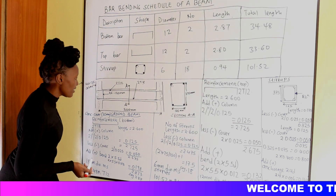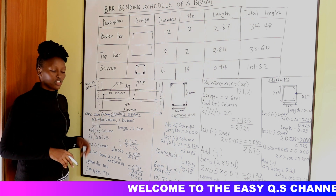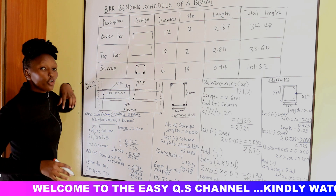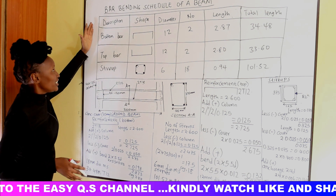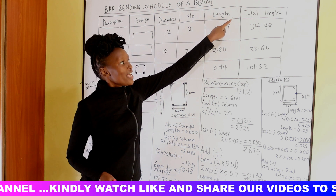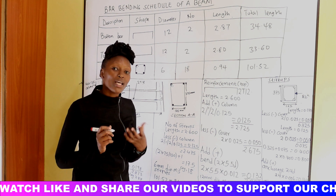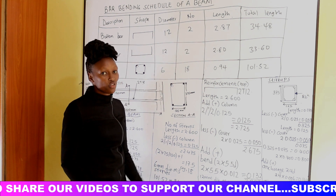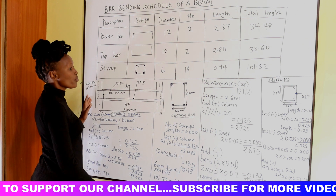Once we are doing the takeoff, note that concrete cover is 25 millimeters. We want to fill in the schedule — you will have to draw your own schedule table with columns for description, shape, diameter, number, length, and total length. Schedules help us summarize the work so it is easier to book into the takeoff sheet. We shall start with the T12 bars at the top.